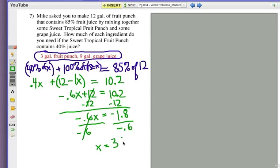Now, that's the fruit punch. And remember that I wanted to have 12 altogether. So, just figuring out logically, that means 9 of the grape juice. 3 of the fruit punch and 9 of the grape juice. I hope that made sense to you. Let's look at number 8 and have you give that a try.